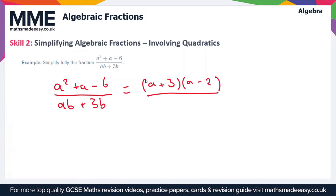If you're not confident on this, we have a separate video on factorizing into double brackets. The denominator will factorize into a single bracket by taking out a factor of b, giving us b lots of (a plus 3).